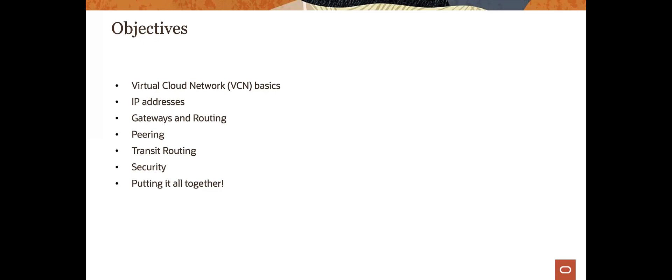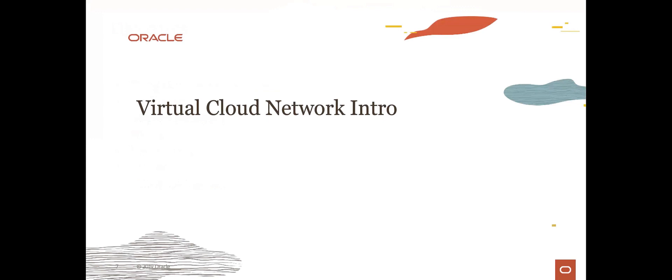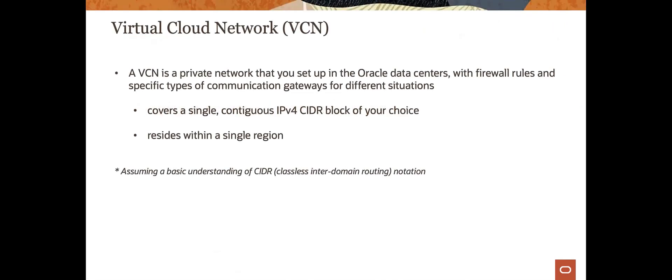Starting with the intro on VCNs — virtual cloud networks. At a high level, it's a private network you set up in the data center with firewalls, rules, and all the specifics you need for networking, including the communications gateways for different situations you'll encounter when setting up your IT real estate. Importantly, it covers a single contiguous IPv4 CIDR block, which you can choose, and these reside within a single region.